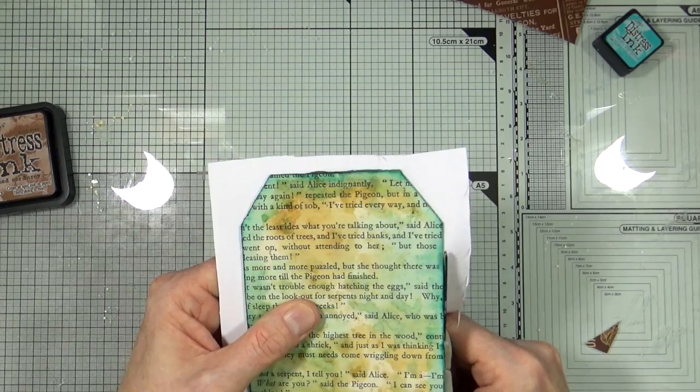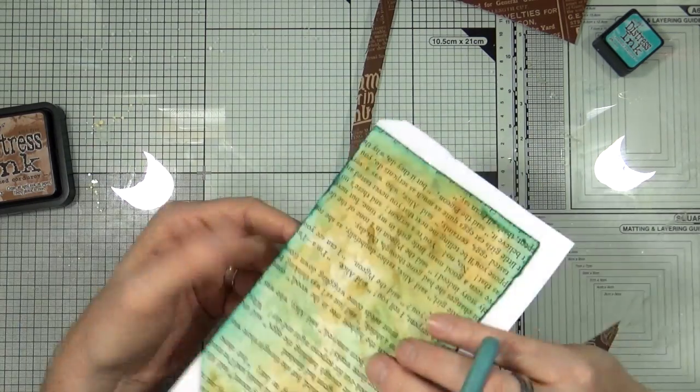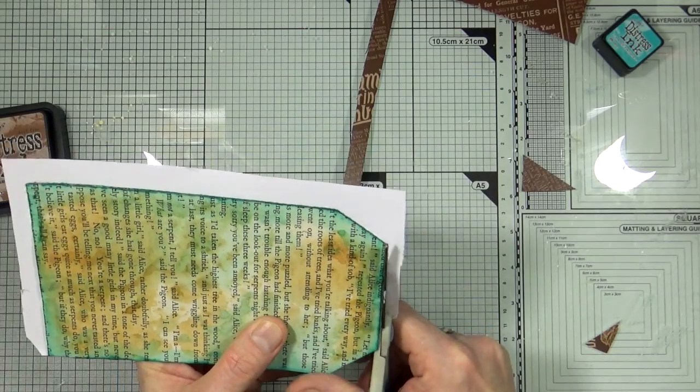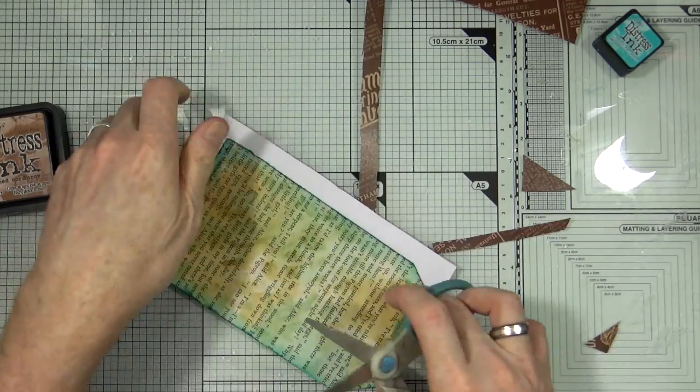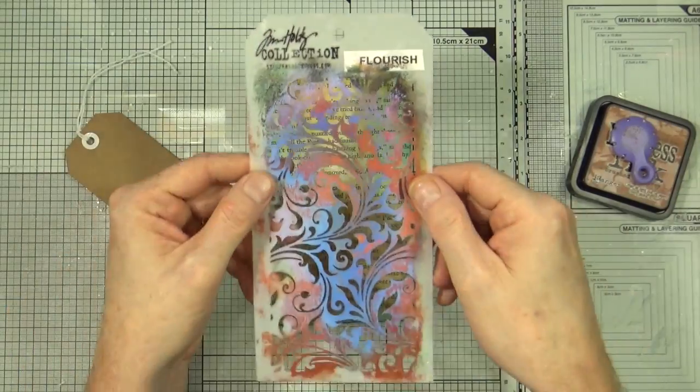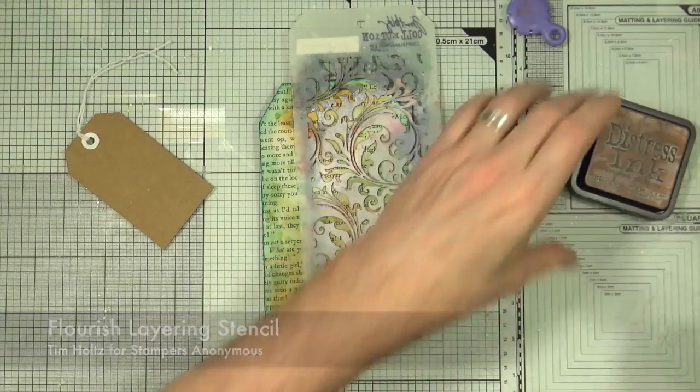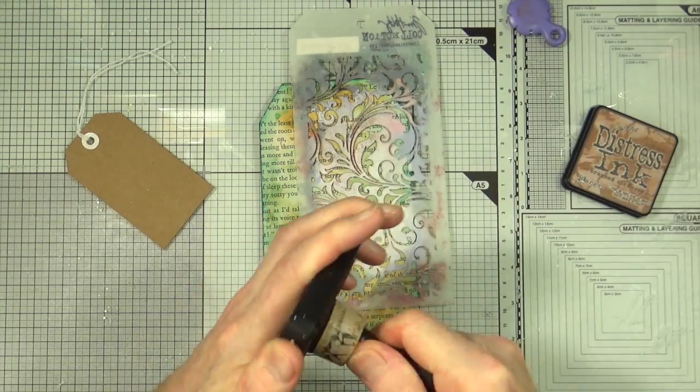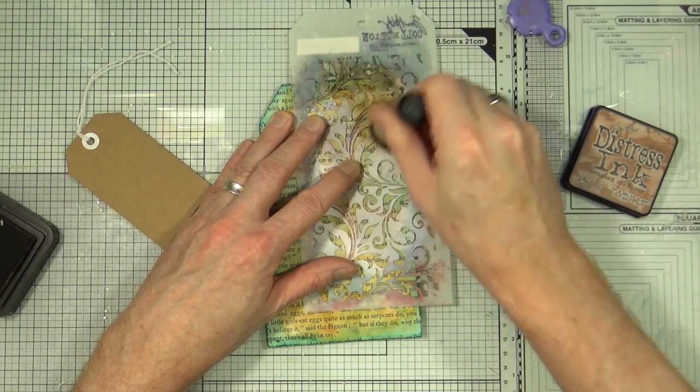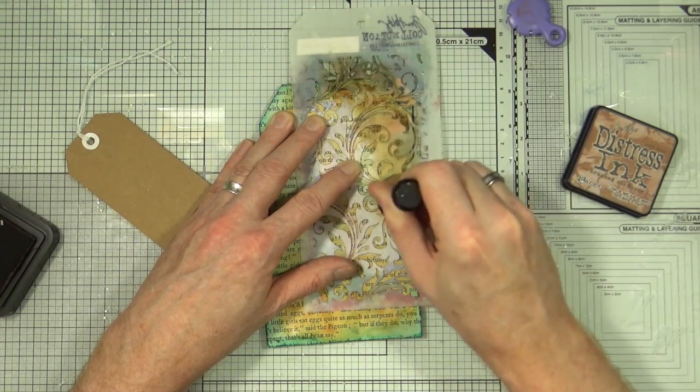Once the tag is completely trimmed out and I've tidied up all the edges for the back of the tag, I'm going to start decorating the front. To do that I've brought out my Tim Holtz layering stencil, this is the flourish from Stampers Anonymous. I'm going to be using the same colored distress inks as I have done already, which is the brushed corduroy and the peacock feathers, and I'm just going to layer some of those lovely flourishy kind of details around the edges of the craft tag.